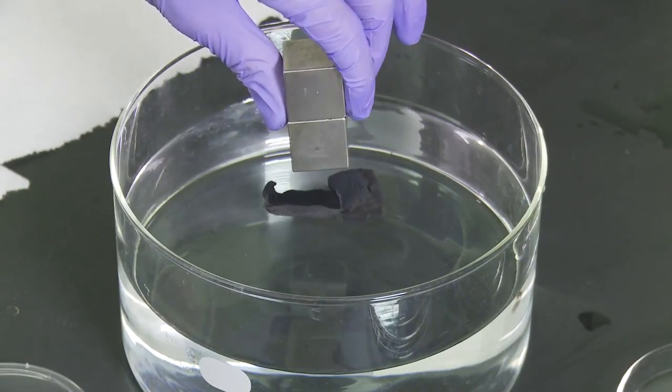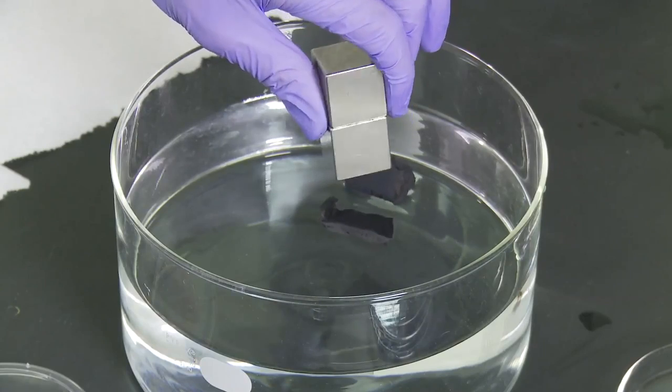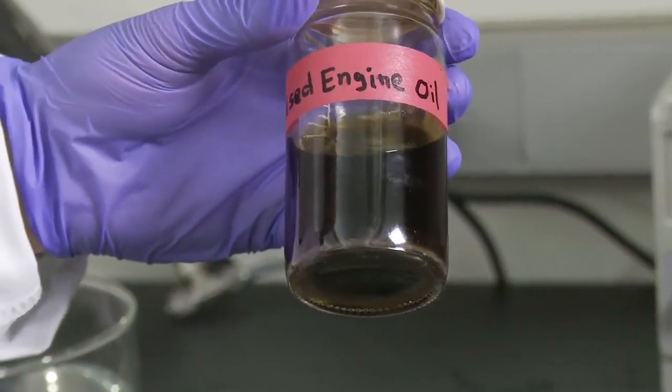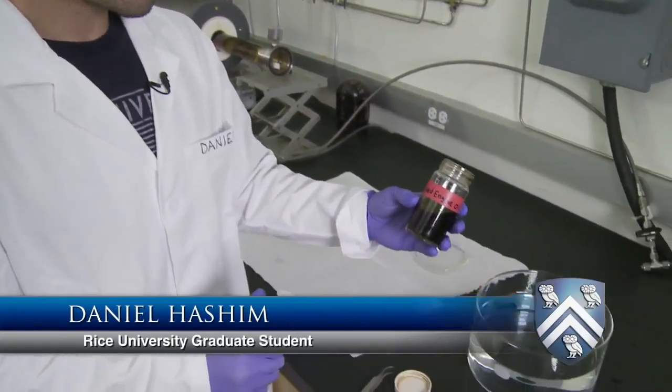This is used engine oil I got from a local gas station, and what we're going to do is drop some of this oil into this water and have our sponge nanotube material absorb the oil selectively out of the water.